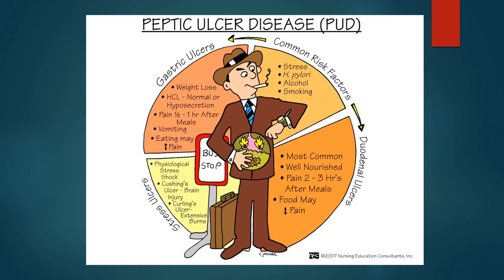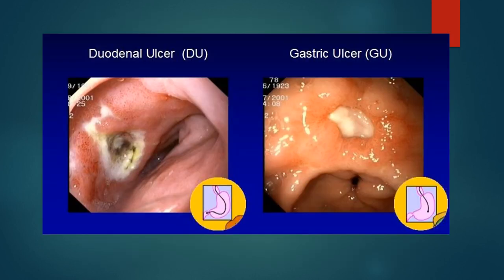Here's a great slide on clinical manifestations of the different types of ulcers — note the difference between the duodenal and the gastric ulcers. And here's an endoscopy picture of a duodenal ulcer versus a gastric ulcer for visual learners.